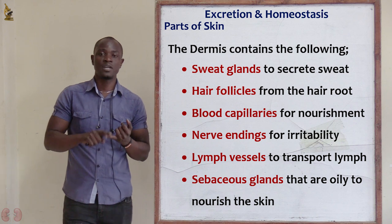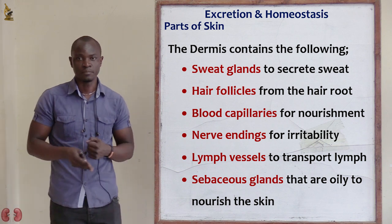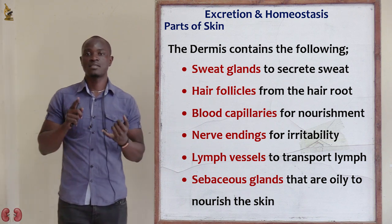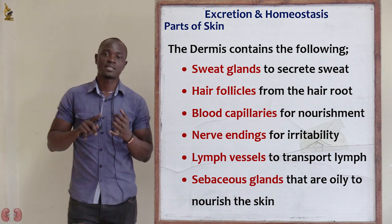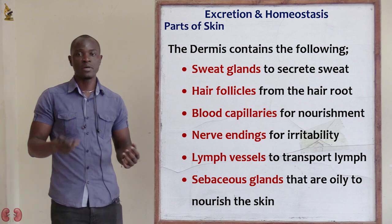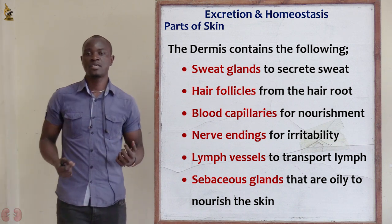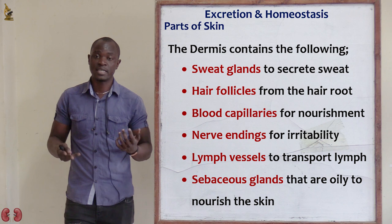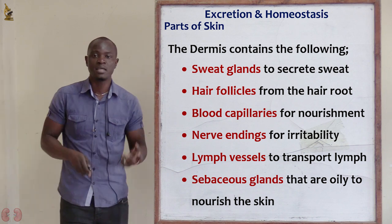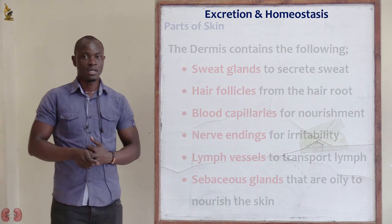The dermis contains different structures: sweat glands which produce sweat, hair follicles with root hairs giving rise to different hairs, blood capillaries which moisten and nourish the skin, nerve endings for the irritability process, lymphatic vessels to supply lymphocytes to fight infections, sensory organs for irritability, and sebaceous glands to moisten the skin.